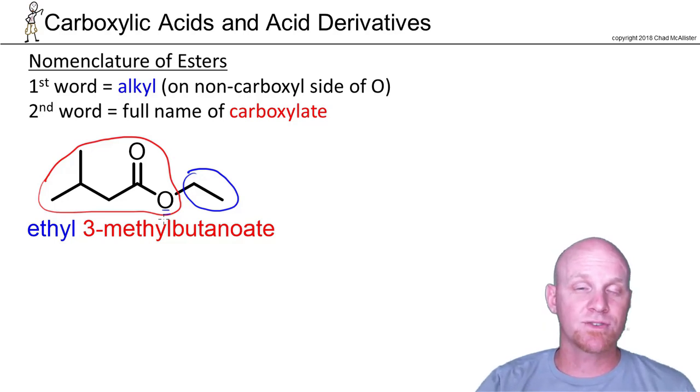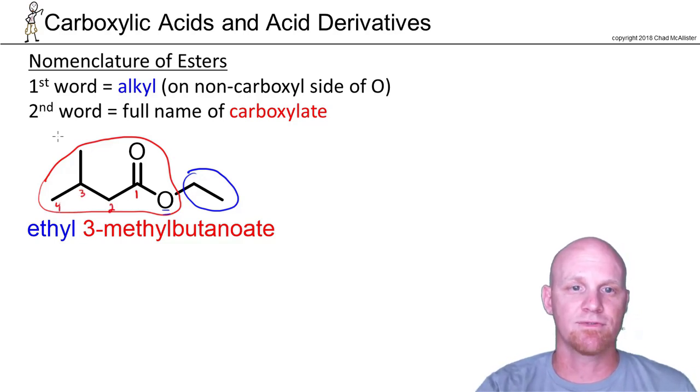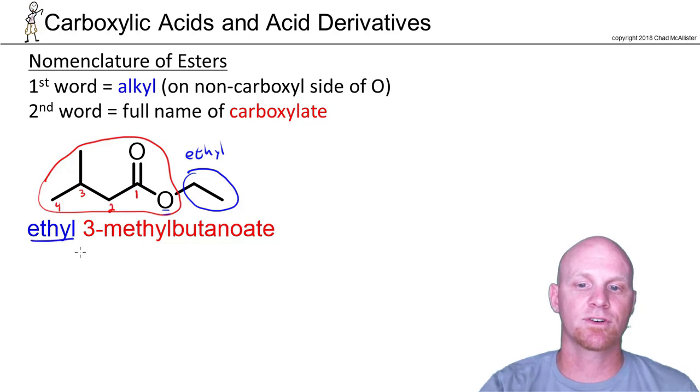So the carboxylate side is looked at as the parent chain, and your ester is always going to be anchored to that parent chain. So there's one, two, three, four, and then the other side is looked at as a substituent, and it becomes the first word. So that's simply an ethyl group, and that's why that's the first word.